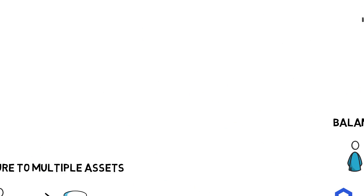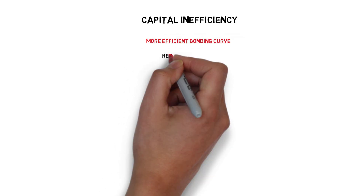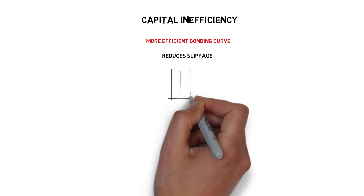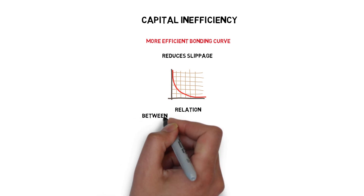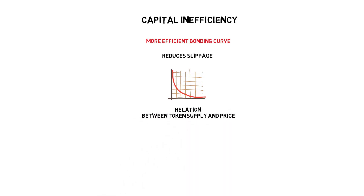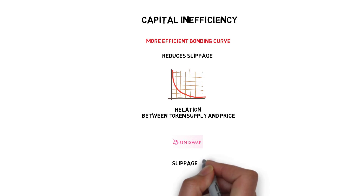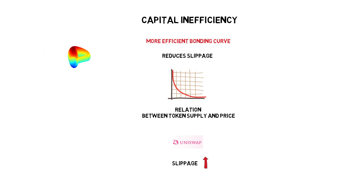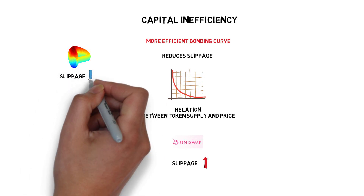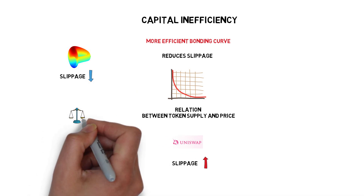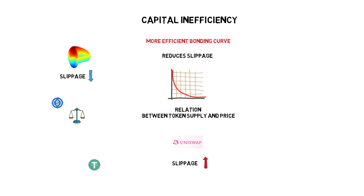To tackle another problem — capital inefficiency — Bancor V2 introduces a more efficient bonding curve that reduces slippage. Bonding curves represent a relation between the token supply and price. Standard bonding curves present in constant product market makers such as Uniswap incur quite a lot of slippage as the size of a trade increases in relation to the size of the pool. The Curve protocol was created to accommodate this problem; Curve pools are able to provide lower slippage as they consist of assets that should have a very similar price, for example stablecoins like USDC and USDT, or different flavors of Bitcoin such as WBTC and renBTC.